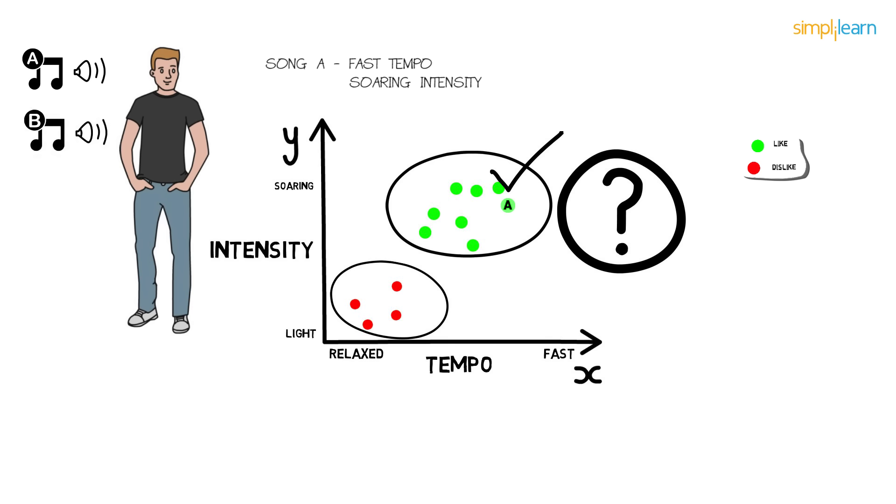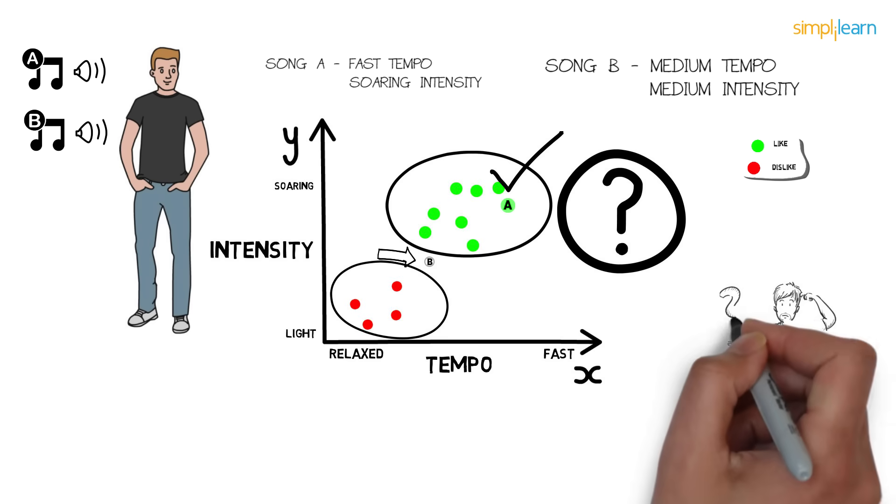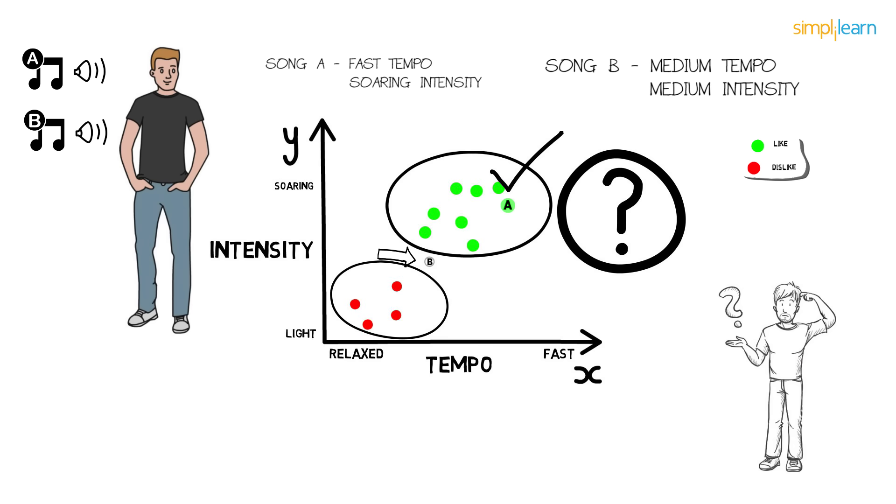Let's say now Paul listens to a new song. Let's label it as song B. So song B lies somewhere here with medium tempo and medium intensity. Neither relaxed nor fast, neither light nor soaring. Now can you guess whether Paul likes it or not? Not able to guess whether Paul will like it or dislike it? Are the choices unclear? Correct.